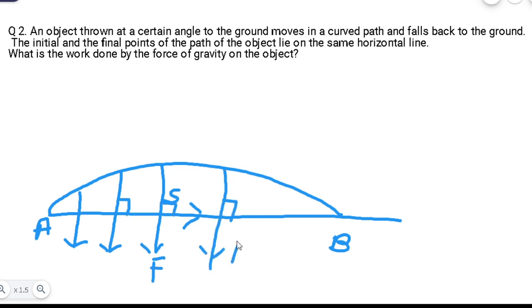यह force है, और यह displacement है. यह displacement है आपका. तो angle हमेशा 90 degrees बन रहा है. मतलब work done कितना होगा - work done आपका है, the work done is 0.